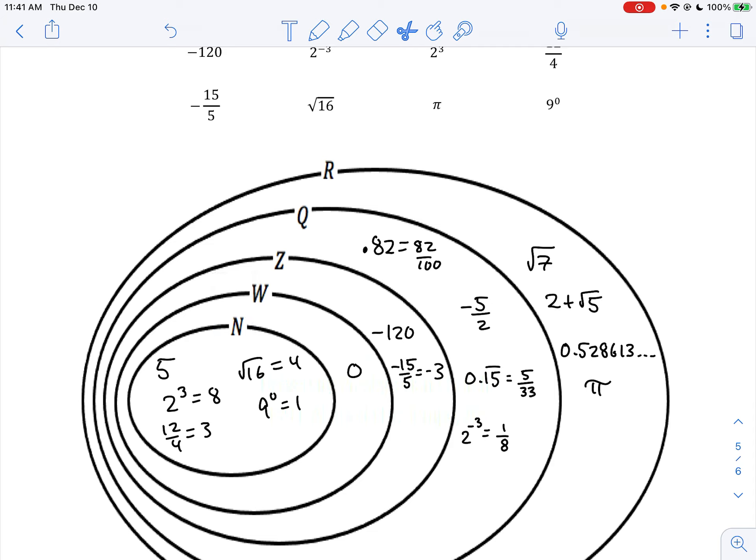How many integers were there? Well, if there were six whole numbers and then two more integers, so we really had eight integers total in the Z circle, but two of them were outside the W circle. They were not whole. So in other words, negative counting numbers. So negative 120 is a negative counting number. Negative 15 fifths is the same thing as negative 3, that's a negative counting number. So those are the two that go in this ring.